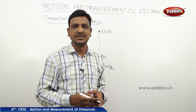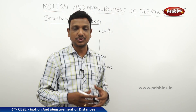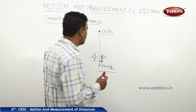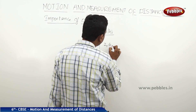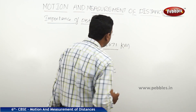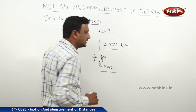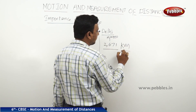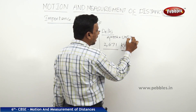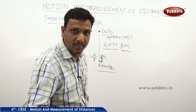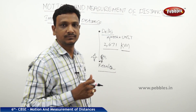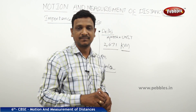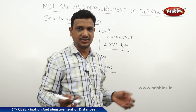You need not measure the distance between two cities because it's all updated on the internet. For example, the distance from Kerala to Delhi is 2671 kilometers. Notice two things are given here: one is the number, and the other is the unit — km. When talking about a distance, you always find two things: the number and the unit.